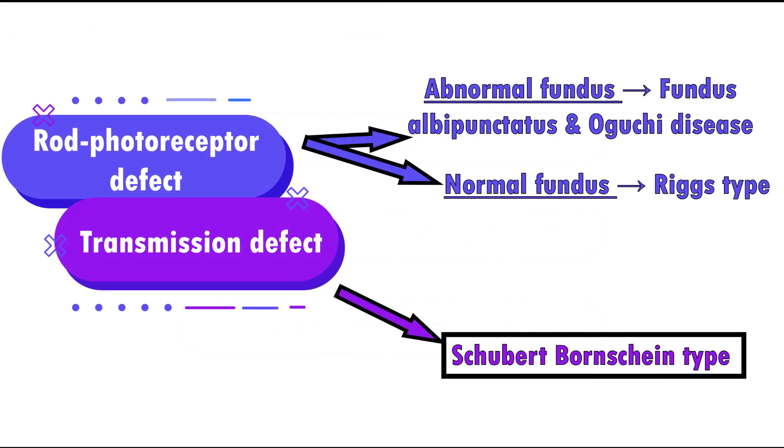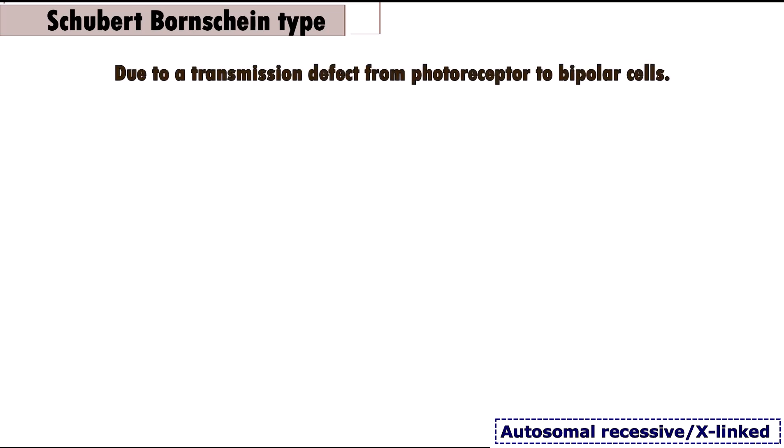The Schubert-Bornschein type is the most common form of congenital stationary night blindness. To recollect, it is due to a transmission defect from photoreceptor to bipolar cells.